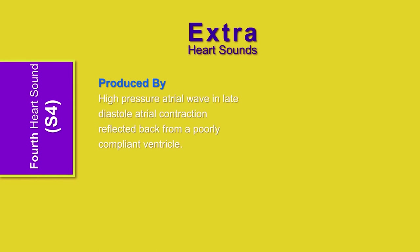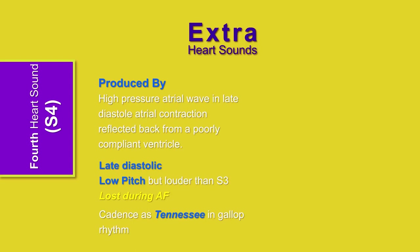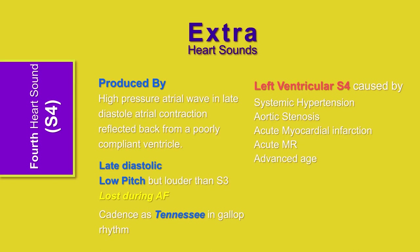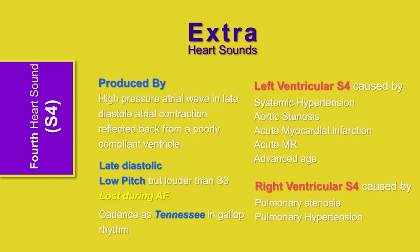S4 is produced during the late phase of diastole when the atria contract against a poorly compliant ventricle. A high-pressure atrial wave is reflected back and S4 is heard. It is a late diastolic, low-pitched sound. S4 is lost during atrial fibrillation, even if ventricular compliance is still poor. S4's cadence is 'Tennessee' in gallop rhythm. Left ventricular compliance can be reduced in systemic hypertension, aortic stenosis, acute myocardial infarction, acute mitral regurgitation, and advanced age, producing left ventricular S4. Right ventricular S4 is produced by pulmonary hypertension and pulmonary stenosis.